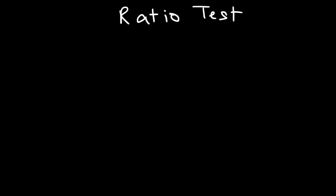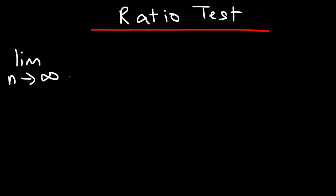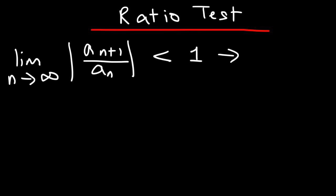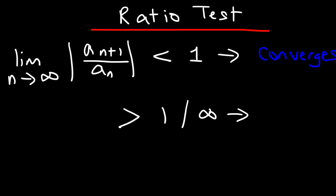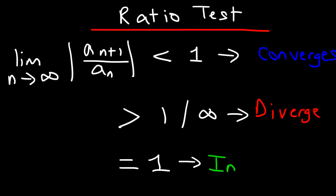The next one we're going to talk about is the ratio test. You need to take the limit as n goes to infinity of the absolute value of a sub n plus 1 divided by a sub n. If your result is less than 1, then the series converges. If your result is greater than 1 or goes to positive infinity, then the series will diverge. Note that negative infinity won't apply here because your final answer has to be positive. If the limit is equal to 1, then the ratio test is inconclusive.